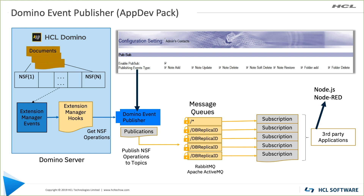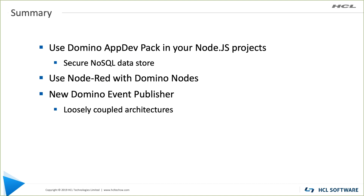Behind the scenes, the Domino Event Publisher can be customized on a per-application basis to define what type of events are published. An event can be sent when a document is created, updated, deleted, put to the trash, or restored, or when a folder is created or deleted. Message queues are organized by replica ID so third-party applications can subscribe to events from a specific Domino application. Node-RED was used as an example to show how easy and fast events from the Event Publisher can be consumed. Use the Domino App Dev Pack to extend the reach of your Domino-based applications, for instance in Node.js projects.